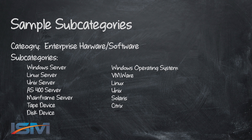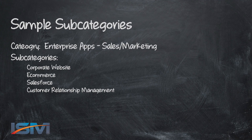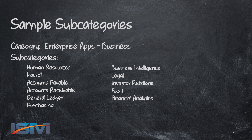The subcategory is the level at which we capture our metrics and reporting. For example, under enterprise hardware and software you'd see things like Windows Server, Linux, Unix, AS400, and VMware — the various enterprise hardware and software components you want to report on. Under sales and marketing applications you'd see e-commerce and Salesforce or your CRM system. Under enterprise applications you'd see accounts receivable, accounts payable, payroll, and financial analytics. The subcategory is a drill-down one level deeper from the category.